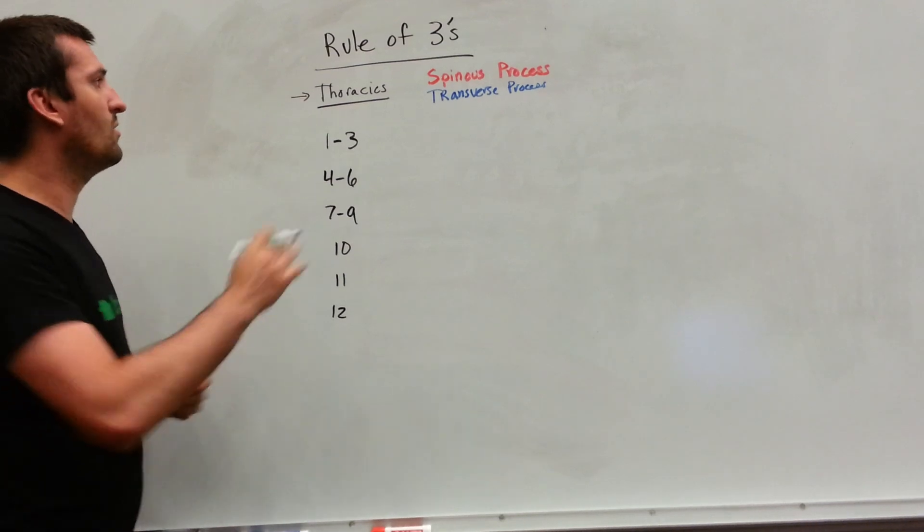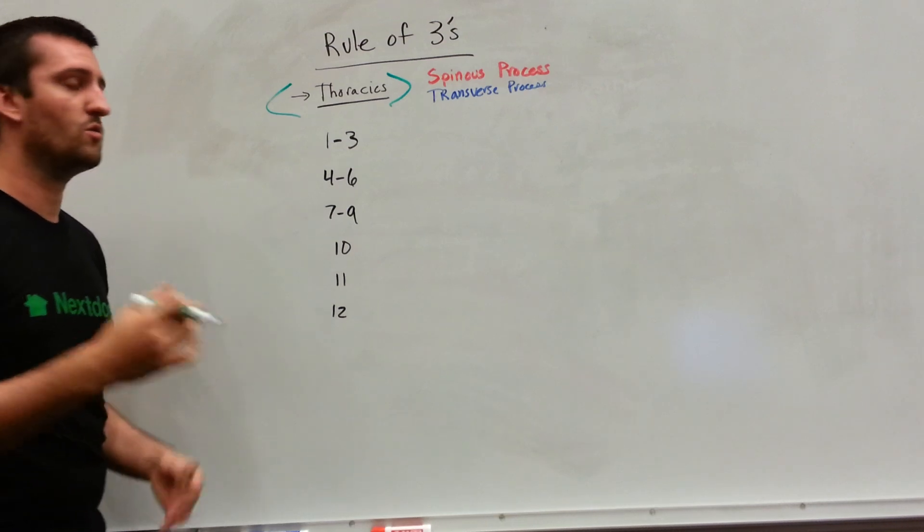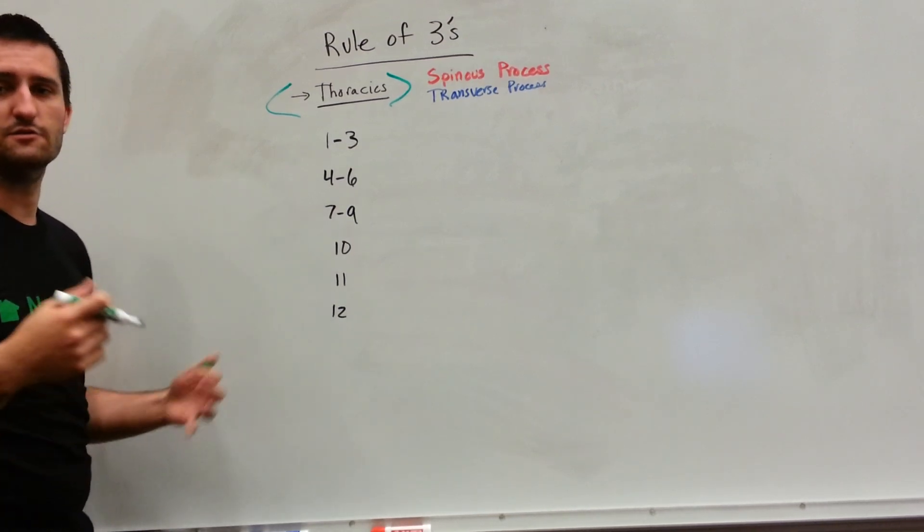The rule of threes. Now what is the rule of threes? We're going to be talking about only the thoracic area, so only vertebral levels 1 through 12.